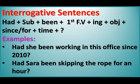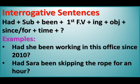For interrogative sentences of past perfect continuous tense, 'had' comes at the beginning, then subject + being + first form of verb with -ing + object + since/for + time + question mark. Examples: 'Had she been working in this office since 2010?' — we know the exact year so we use 'since.' 'Had Sarah been skipping the rope for an hour?' — we do not know which hour so we use 'for.'